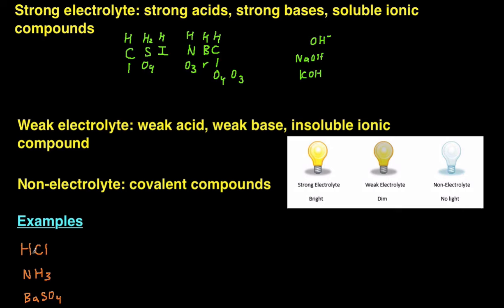The first example is HCl, hydrochloric acid. We should recognize that hydrochloric acid is a strong acid. And since it's a strong acid, it's going to be a strong electrolyte.